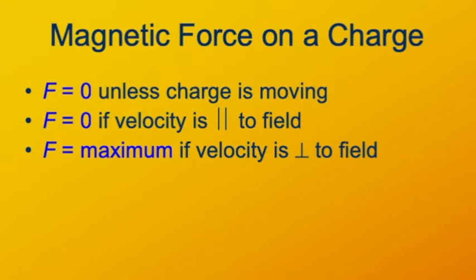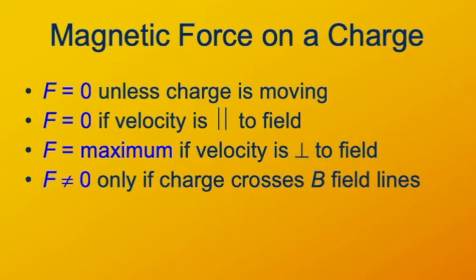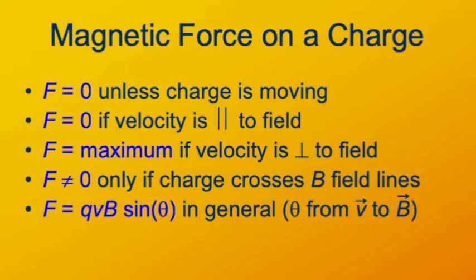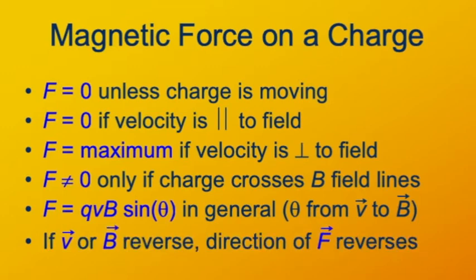On the other hand, if the charge is moving in a direction perpendicular to the field, that's when the force has its greatest magnitude. The magnitude of a cross product is maximum when the two vectors are perpendicular. If the angle between the two vectors QV and B is defined as theta, then the magnitude of this Lorentz force is QV times B times the sine of that angle theta. If you reverse either of those vectors, that will reverse the direction of the cross product F.